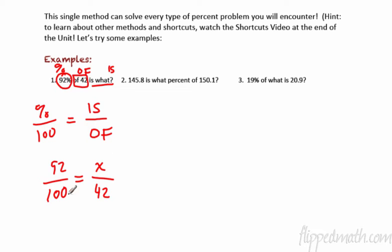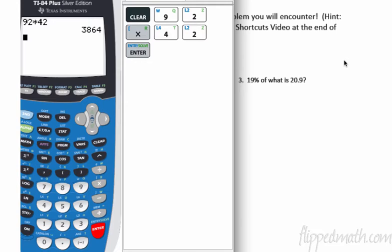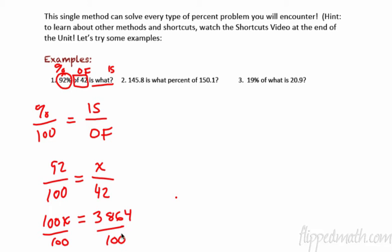All right, so I'm going to write down the proportion: 92 over 100 equals X over 42. This is a very simple problem now. I've just got to cross multiply. 100X equals 92 times 42. I'm going to bring out trusty TI over here. 92 times 42, and we're going to get 3,864. So we'll write that down. Then we have to divide by 100.